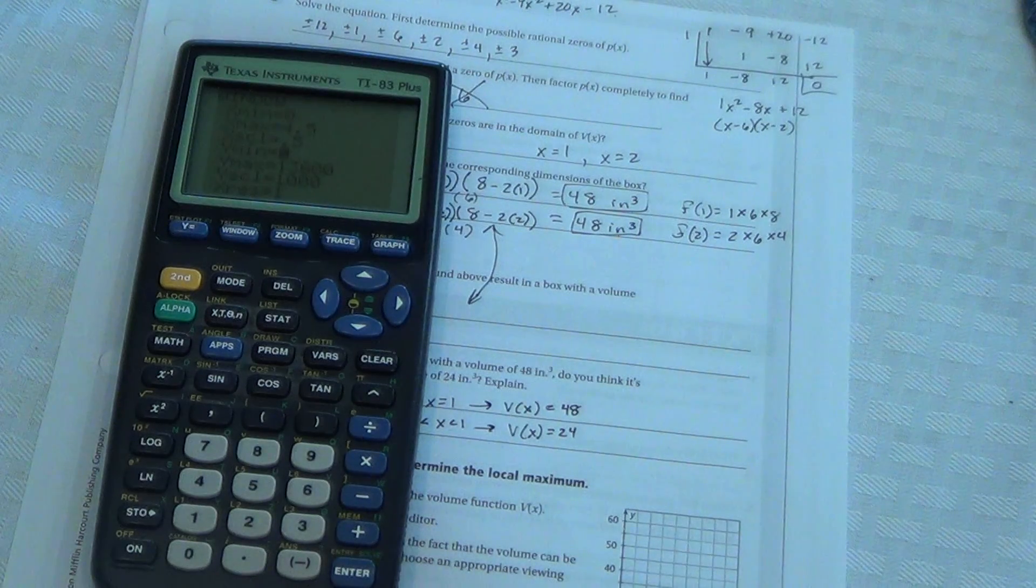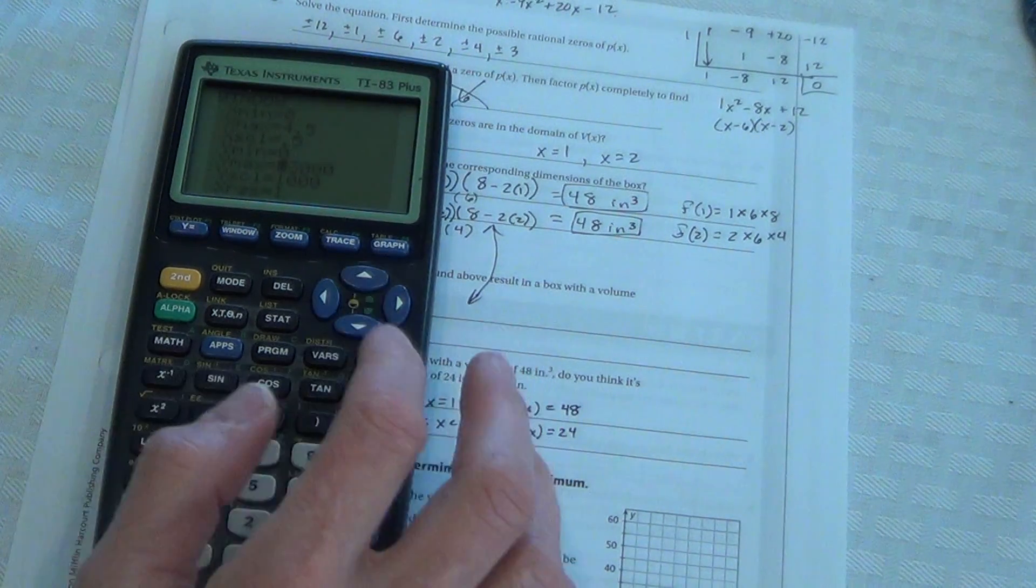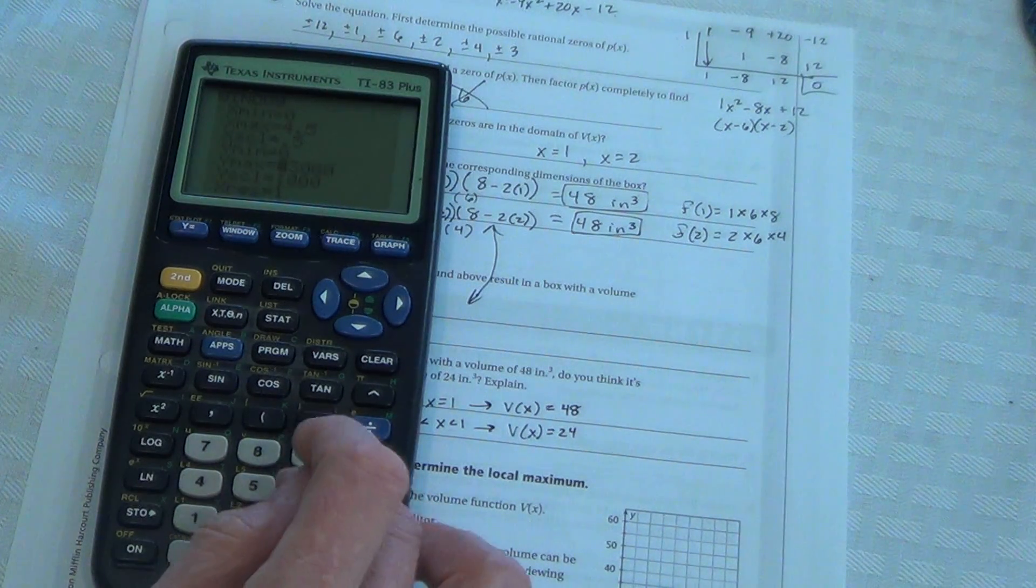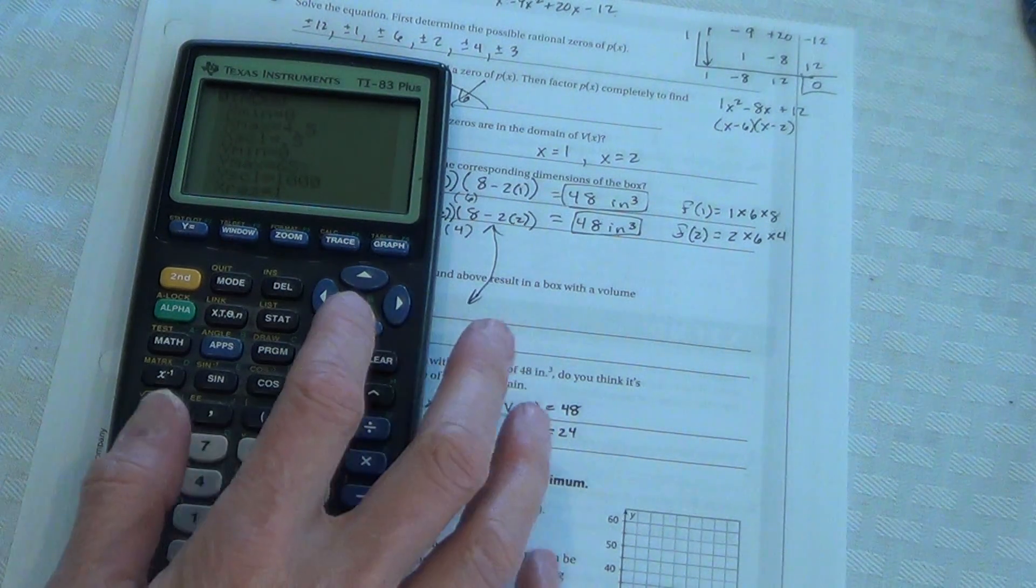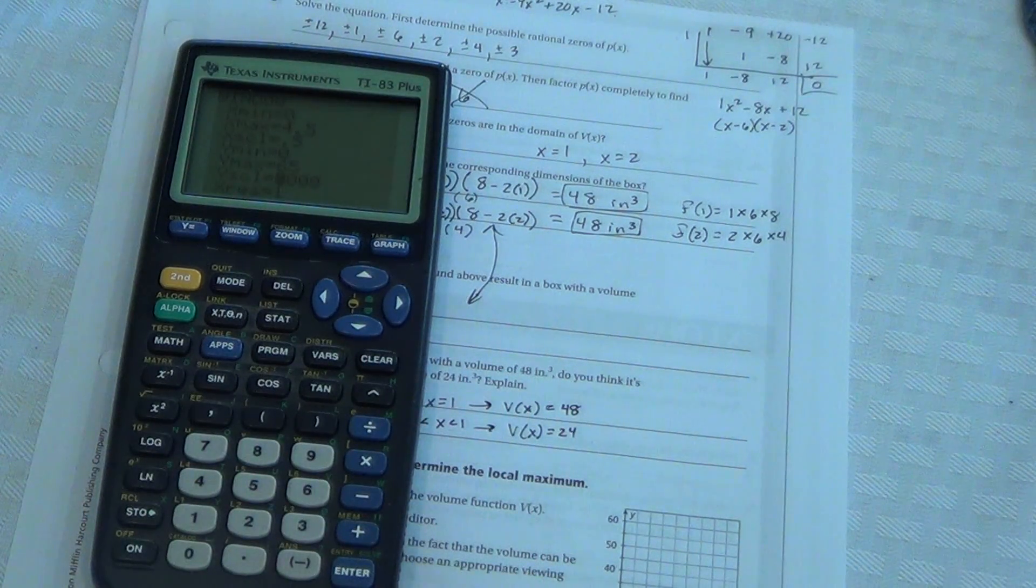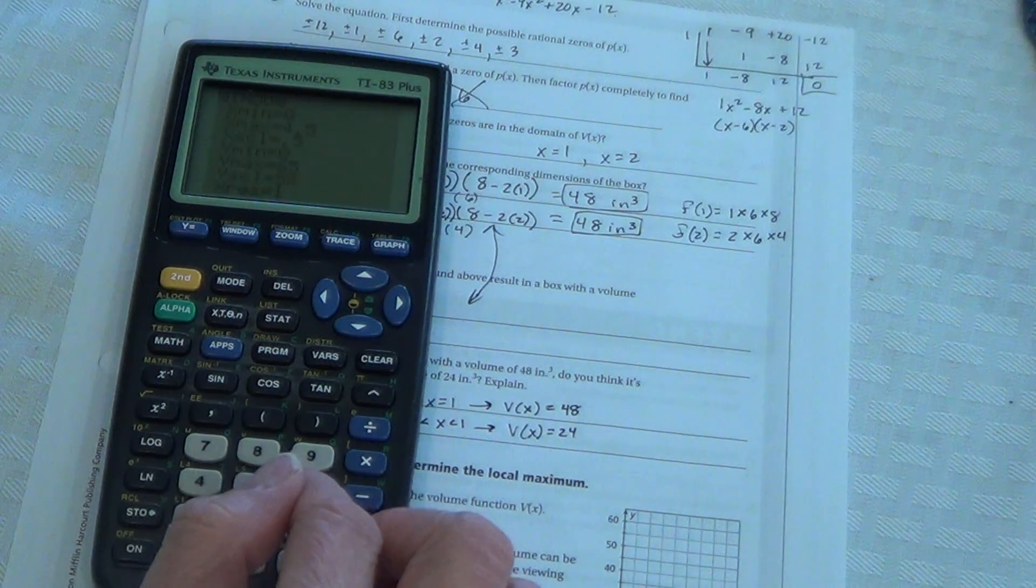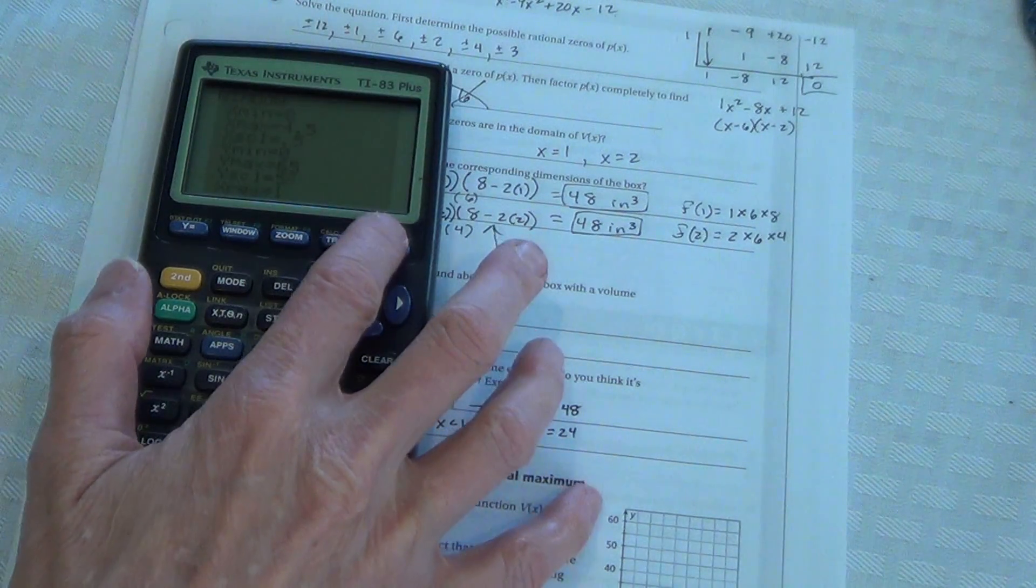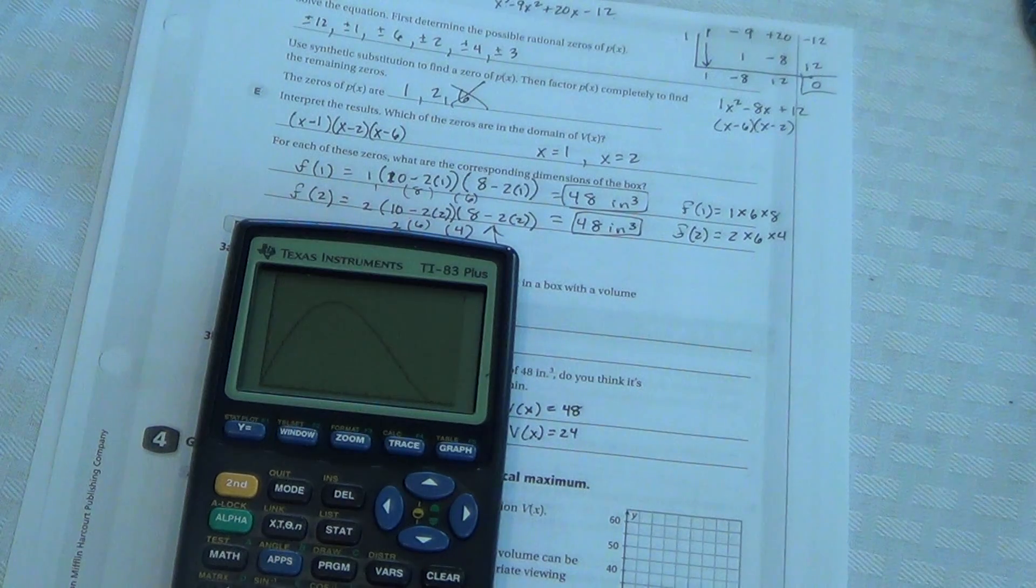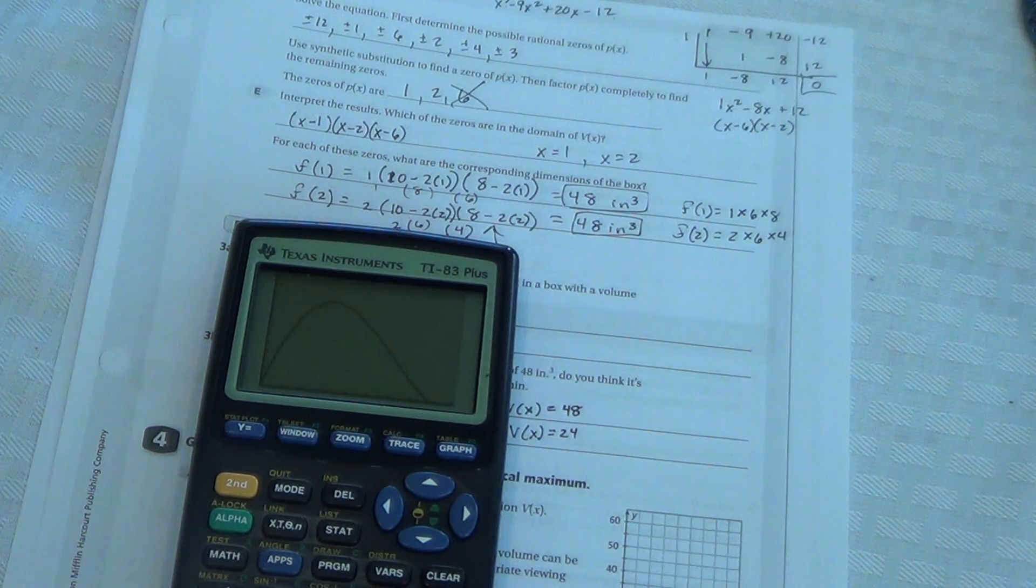Y minimum is 0. Y maximum is 65. The scale is, every square is equal to 5. And, now let's go to graph. Beautiful. Okay. So we want to graph that.